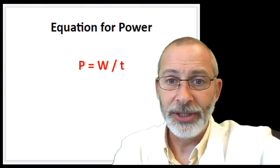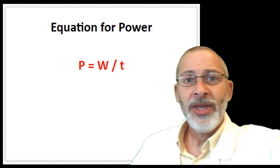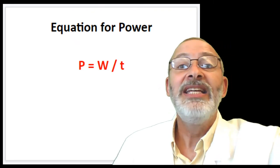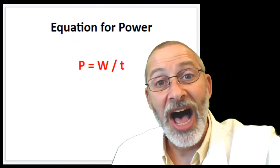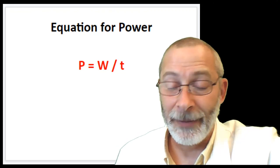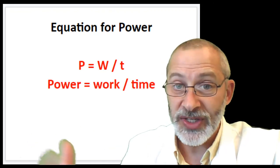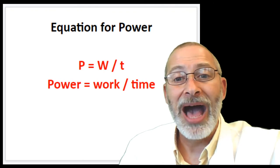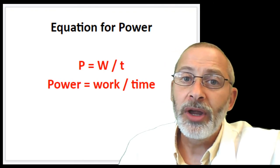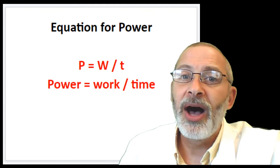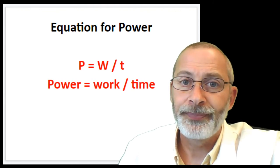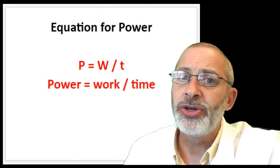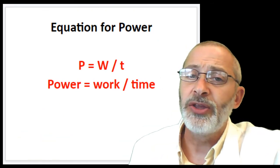Well, hopefully, this is what you came up with. Power, big P, equals big W for work per time or divided by time. We can use words in there to express it so that we can see power equals work divided by time. Make sure you're writing all of these things down in your notes so that you can see the progression that we are following here.